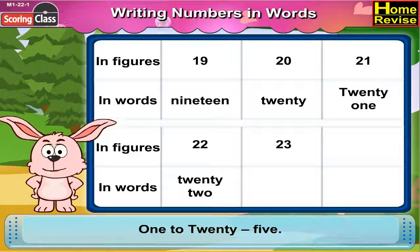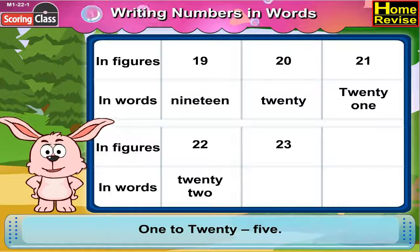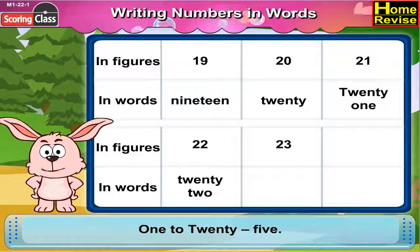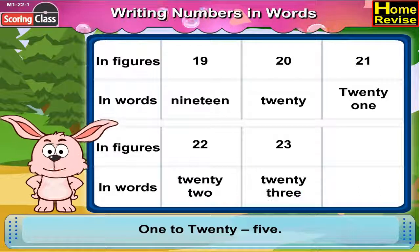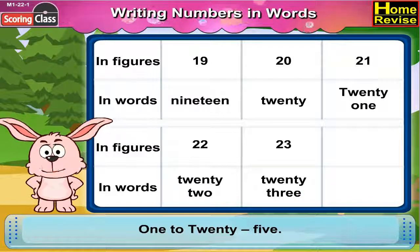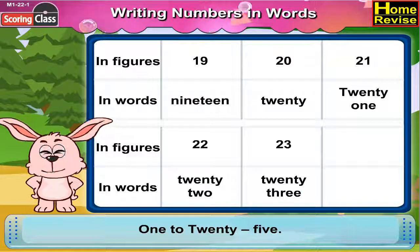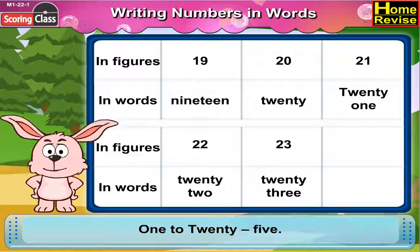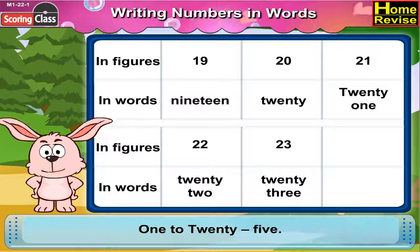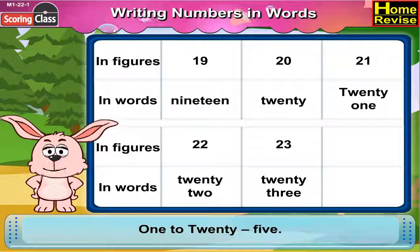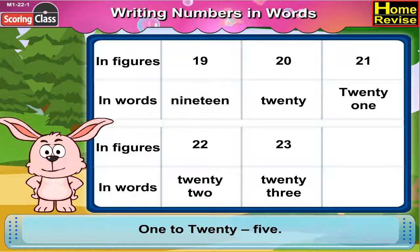23 in figure is 2, 3. In words it is T, W, E, N, T, Y, T, H, R, E, E.